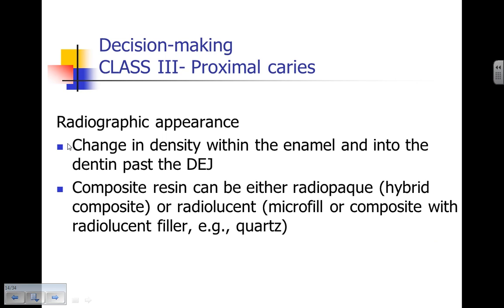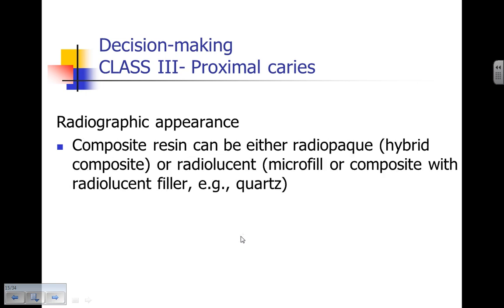Radiographically, we'll see that change in density within the enamel and into the dentin past the DEJ. We may see composite resin restorations on radiographs — they can be radiopaque, such as hybrid or nano-hybrid composites, or radiolucent, generally microfill composites or older composites using a radiolucent filler, typically quartz. This radiolucency means we have to verify the presence or absence of a restoration clinically. We can't diagnose Class 3s by radiograph alone.